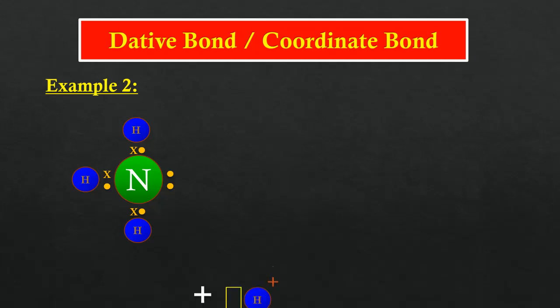Hydrogen ion does not have any electrons in the shell. The lone pair of electrons not involved in the covalent bond in the ammonia molecule will be shared with hydrogen ion through the formation of a dative bond.